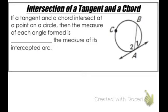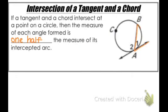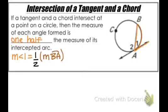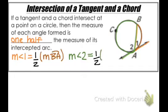For the intersection of a tangent and a chord: if a tangent and a chord intersect at a point on a circle, then the measure of each angle formed is one-half the measure of its intercepted arc. Angle 1, formed at the point of tangency, equals half of arc BA. Similarly, angle 2's measurement is half the measurement of arc BCA. These are two properties involving a chord and a tangent intersecting on a circle.